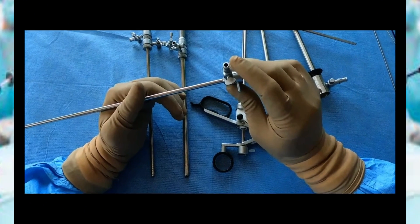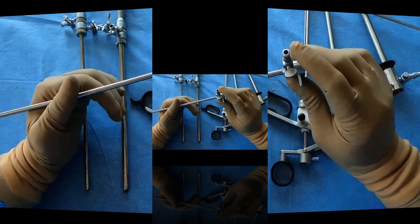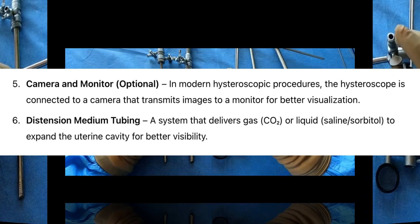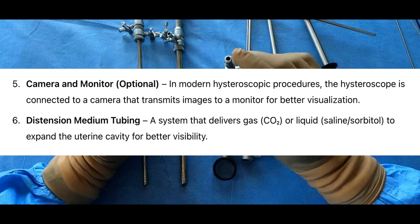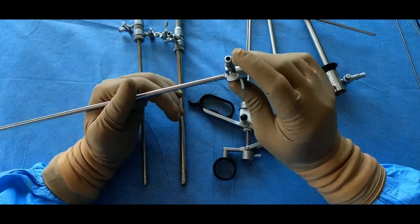5. Camera and monitor (optional) — in modern hysteroscopic procedures, the hysteroscope is connected to a camera that transmits images to a monitor for better visualization. 6. Distension medium tubing — a system that delivers gas (CO2) or liquid (saline, sorbitol) to expand the uterine cavity for better visibility.